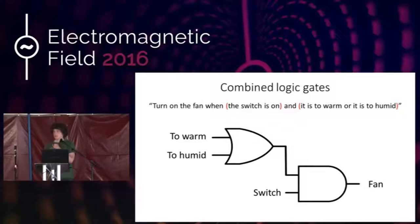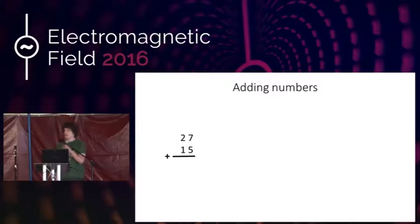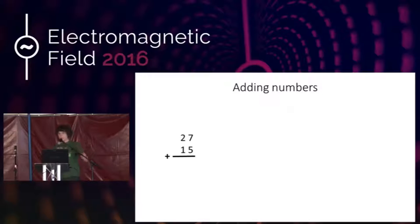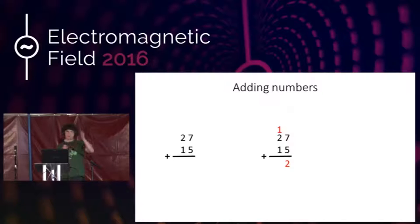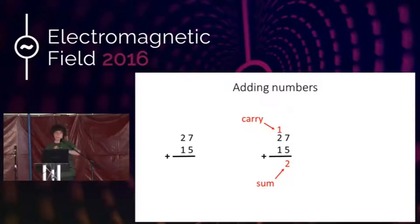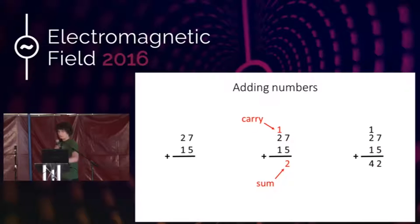The next thing is more practical: adding numbers. It's useful to first look at how we'd add numbers in decimal by hand. If we want to add 27 and 15, we look at the rightmost column and add 5 and 7, which is 12. We write 2 below the bar and carry over 1 to the next column — we call the 2 the sum and the 1 the carry. Then in the second step we add 1, 2, and 1, and the result is 42.